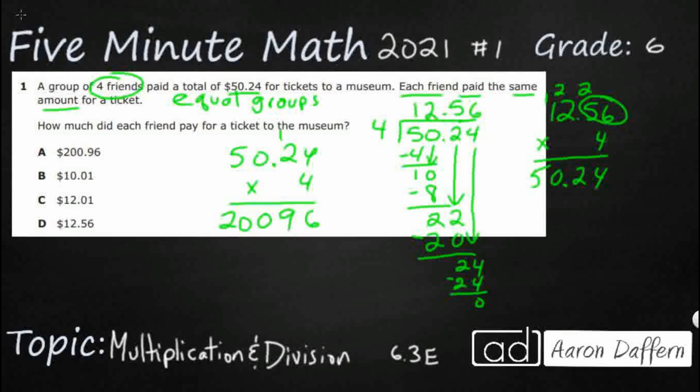I've got two digits behind the decimal in the factor, so I'm going to have two digits behind the decimal in my product. Now, this is also an answer choice.